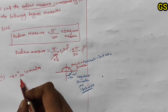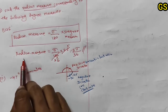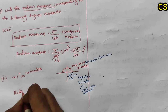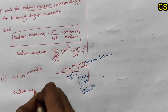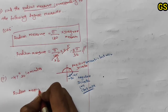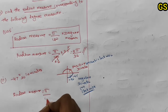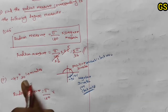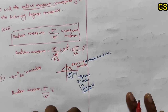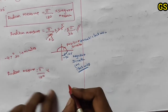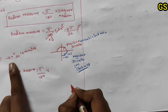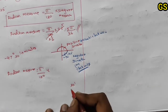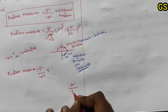Looking at the radian measure: radian measure equals pi by 180 into degree value. But here we have minutes, not just degrees. One degree has 60 minutes, so the first step is to convert 30 minutes — 30 out of 60 minutes.